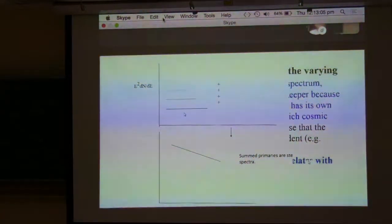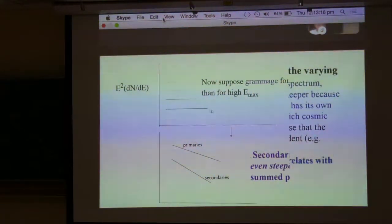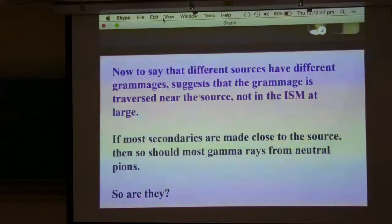Now suppose further that the grammage traversed by cosmic rays with low Emax is greater than traversed by cosmic rays with high Emax. In that case, secondaries such as boron will be even steeper than the primaries. This makes a very simple prediction. It says that different sources have different grammages, and that means that the grammage traversed depends on the source. Most of the grammage is traversed near the source, not in the interstellar medium after the cosmic ray has left the source.